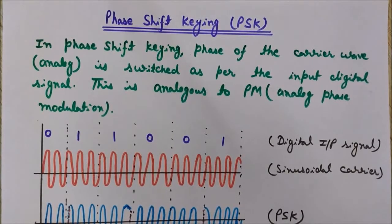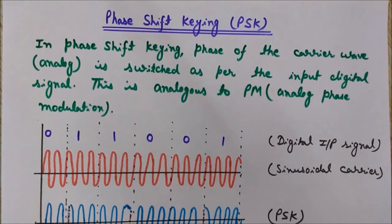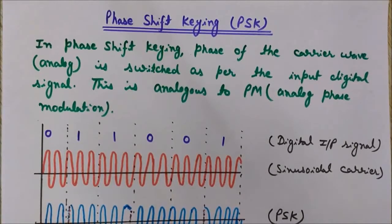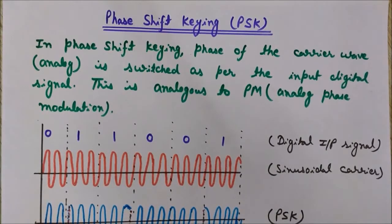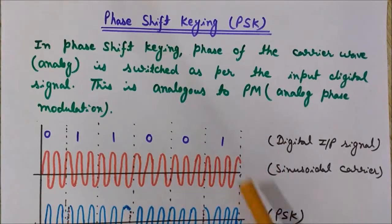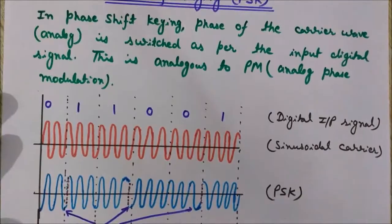In phase shift keying, the phase of the carrier wave, which is analog, is switched as per the input digital signal. This is analogous to PM, that is phase modulation, which is a kind of analog phase modulation. The concept is the same — in analog phase modulation, the phase of the carrier wave is varied according to the instantaneous value of the message signal. In PSK, since it is a digital kind of modulation, the input signal is of digital nature and the carrier wave is switched according to this input digital signal.